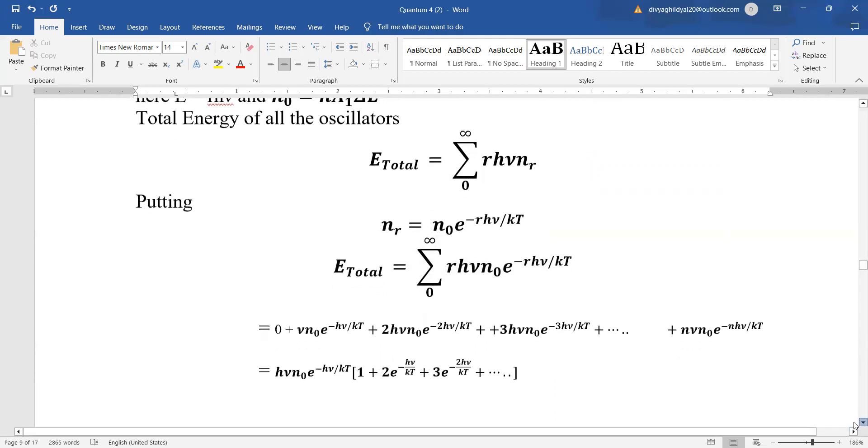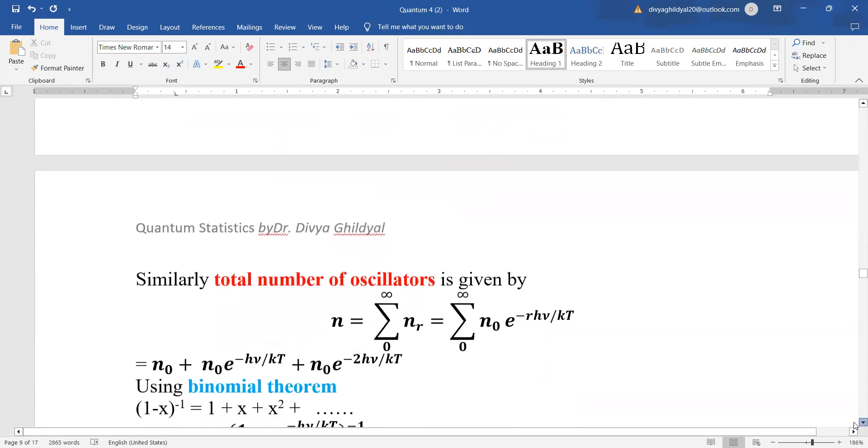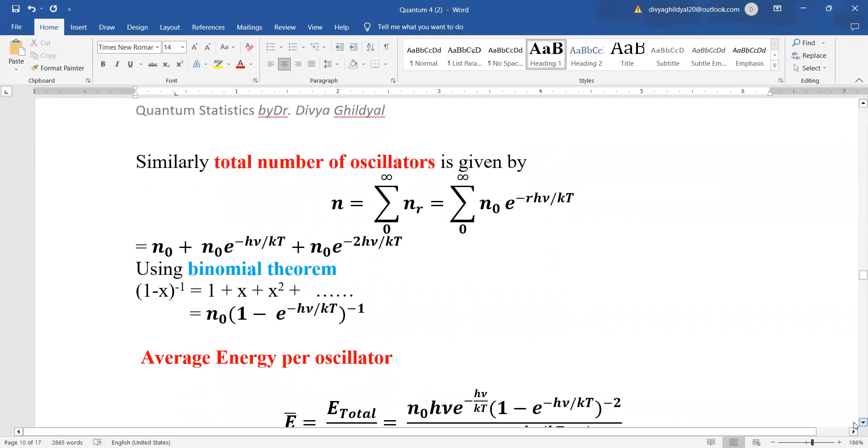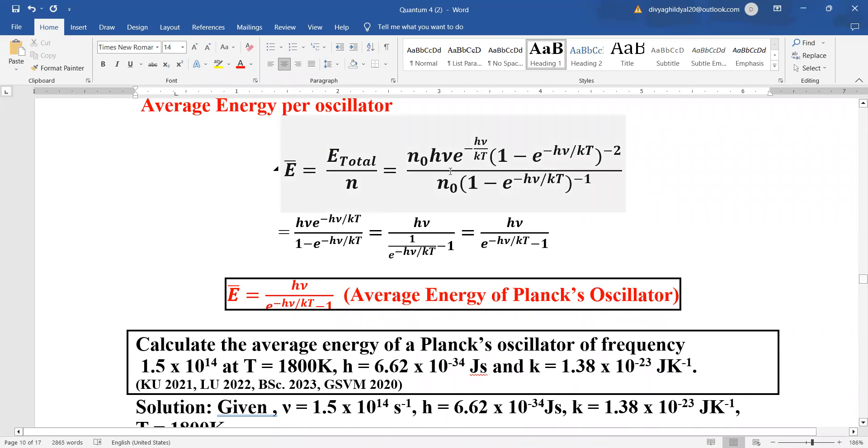Now, what we will do, we will sum up this series using binomial theorem and once we apply binomial theorem to this series, the total number of oscillators is given by n is equal to sigma 0 to infinity nr equal to sigma 0 to infinity n0 e to the power of minus rhμ by kT. Again, we will use binomial theorem to sum up the series and the average energy will be given by e total divided by n and simplifying this expression, we get average energy of Planck's oscillator is equal to hμ upon e to the power of minus hμ by kT minus 1.